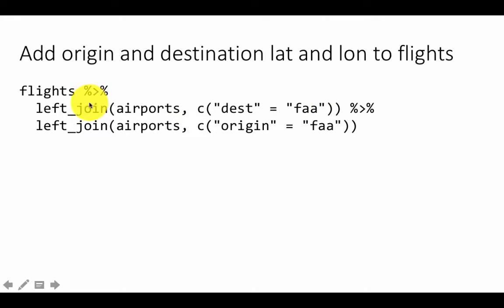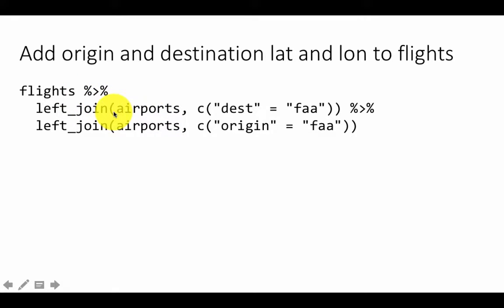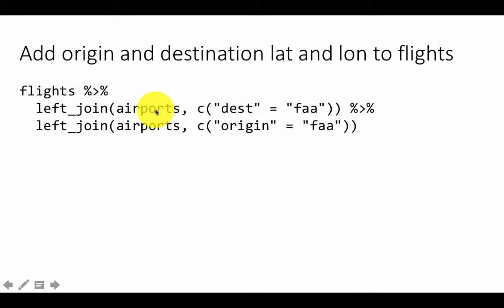Then to the result, we do a left join again with airports. This time we say origin of this resultant thing, so the result of the first left join has an origin from flights. Now we are joining the FAA from airports to that. So effectively we are doing flights left join airports, and to the result of that we are doing another left join airports. The first left join connects destination to FAA; the second left join connects origin to FAA.